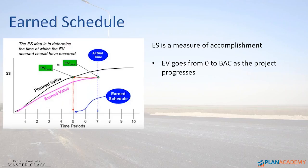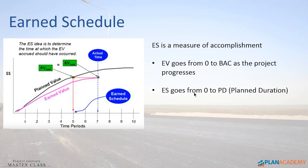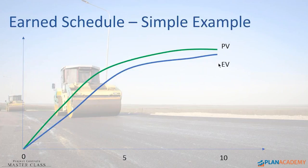Here's how Earned Schedule works. This is from Walter Lipke's slides. The main idea is to determine the time at which earned value accrued should have occurred. In equations, it means: where did PV equal EV? It's looking a bit complex, but we'll work through it on the next slide.